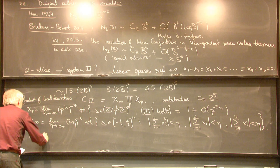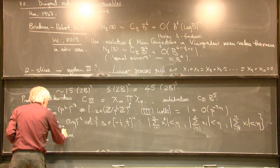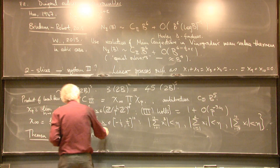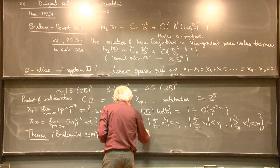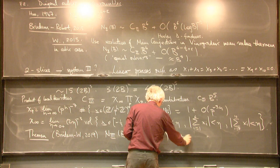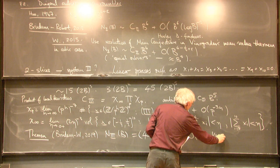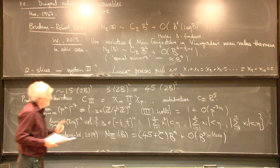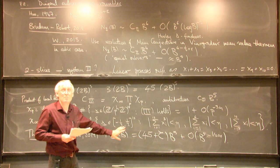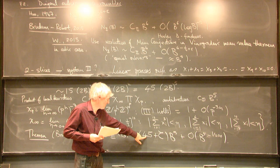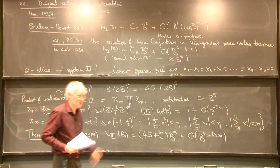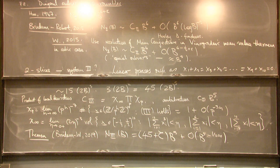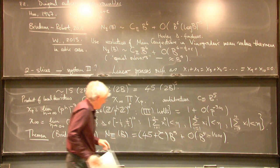The theorem — joint with Brüdern from this year — is that the counting function N3(B) is precisely the sum of these two things: the contribution from the special subvarieties (45 times 2B to the 5) plus c3 times B to the 5 (the product of local densities), with an error term that saves a positive power of B — probably as high as one quarter with enough work. We're really showing that the counting function is identified with the count from the special subvarieties together with the product of local densities — both are genuine separate contributions.